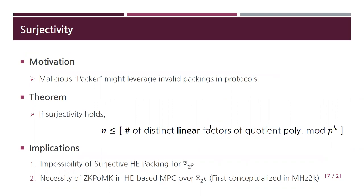We call a packing method surjective if any element of the polynomial ring is a valid packing for some message. Surjectivity is desirable because otherwise a malicious packer might leverage invalid packings in protocols. Our theorem says we cannot pack more than the number of linear factors of the quotient polynomial modulo p^k. This implies it is impossible to construct any surjective HE packing for Z/2^k, which shows the importance of a concept named zero-knowledge proof of message knowledge suggested in MegaHz2k, which proves that a ciphertext contains a validly packed message.